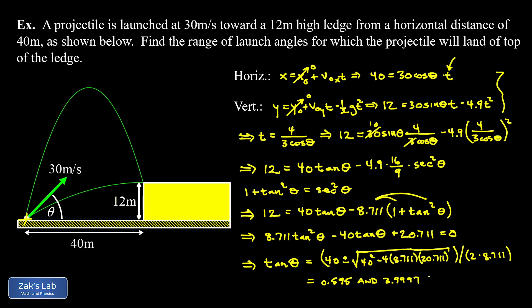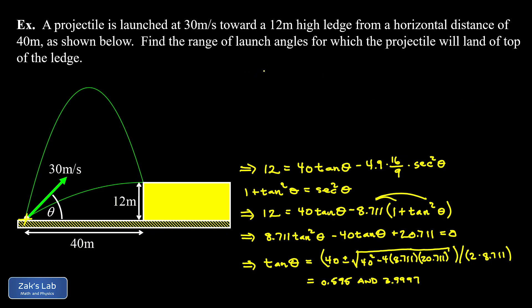That smaller one is going to correspond to the smaller launch angle. And the bigger one is going to correspond to the bigger launch angle. But we still have to invert the tangent function to get our final answers here. So we'll just move back up to the top to finish things out.